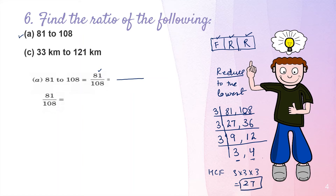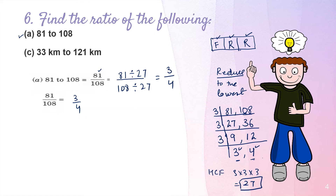Dividing both numbers by the HCF of 27: 81 divided by 27 and 108 divided by 27 gives us 3 upon 4. A useful trick: the resulting numbers appear directly from the prime factor tree, so just read off 3 and 4 in order. The lowest form is 3 upon 4, and the final answer written as a ratio is 3:4.